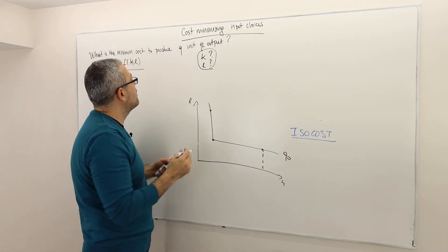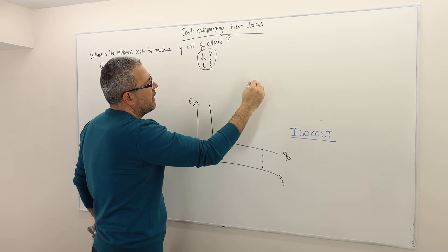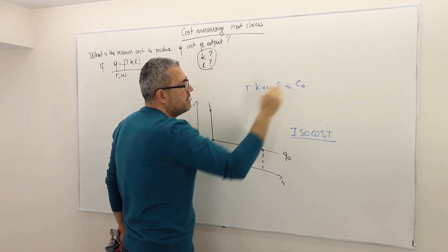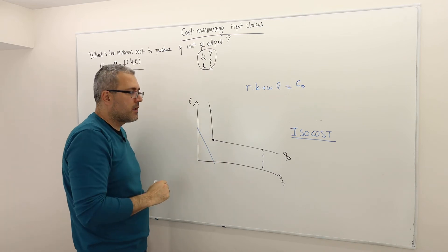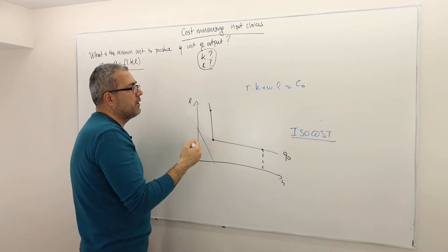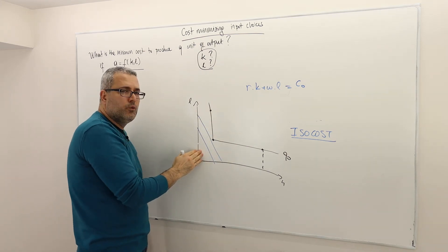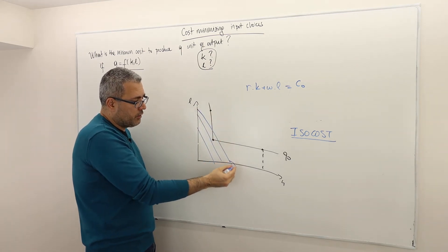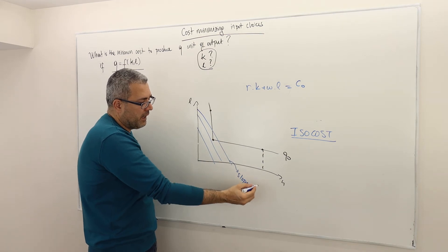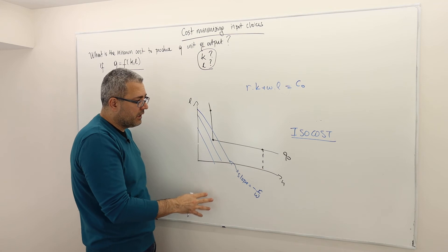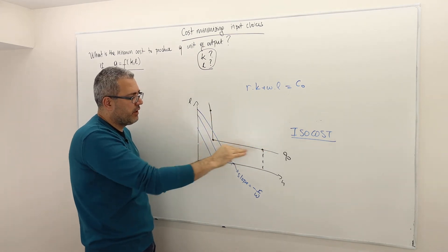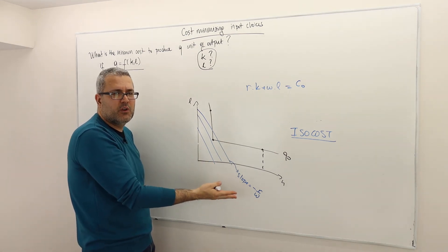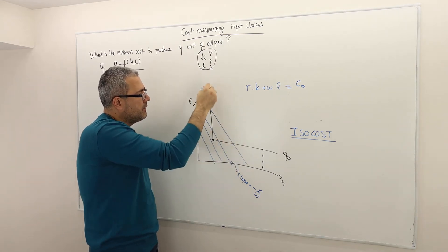The cost function is R times K plus W times L. Setting this equal to some cost level C0 gives a linear curve. Because this is an increasing function of K and L, moving farther from the origin means higher costs. The slope of these isocost curves is equal to minus R divided by W. So the MRTS of the isoquant will never equal minus R over W — these are the isocosts.